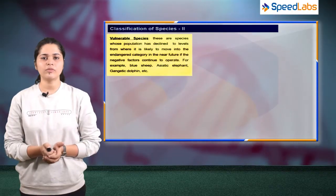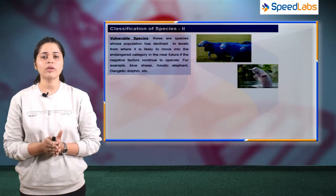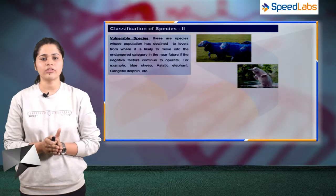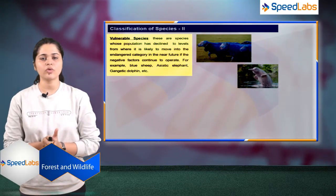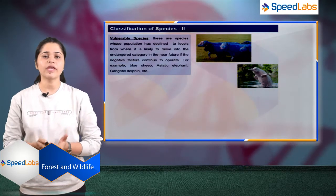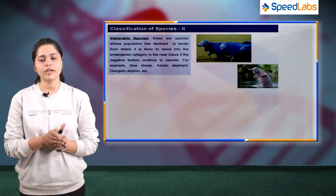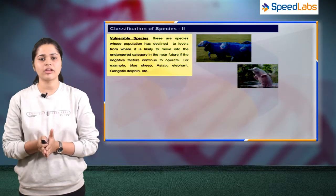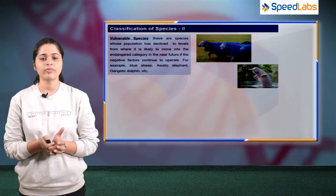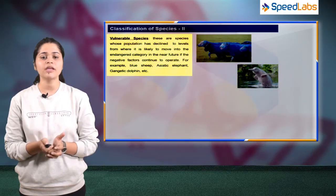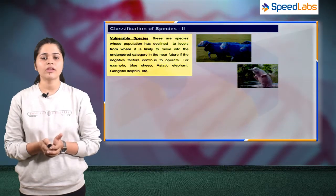The third is vulnerable species. These are species whose population has declined to a level from where they are likely to move into the endangered category if negative factors continue to operate. Examples include the Asiatic elephant, the Gangetic dolphin, and the blue sheep.